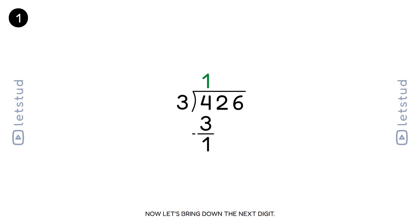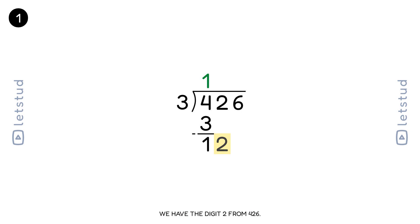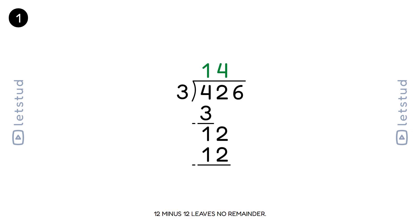Now let's bring down the next digit. Now we have 12. How many times does 3 fit into 12? It fits 4 times. 3 fits into 12 exactly 4 times. 4 times 3 is 12. 12 minus 12 leaves no remainder.